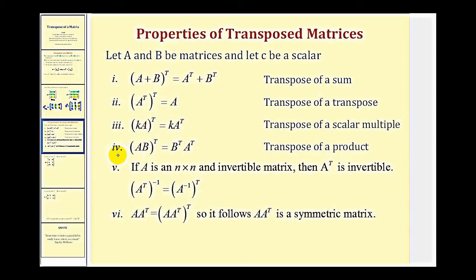Property four might be a little surprising. The transpose of matrix A times matrix B is equal to the transpose of matrix B times the transpose of matrix A. Remember, matrix multiplication is not commutative, so it is important to recognize that the order of multiplication is changing in this property.